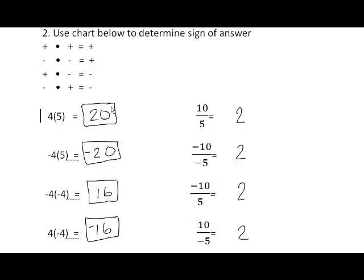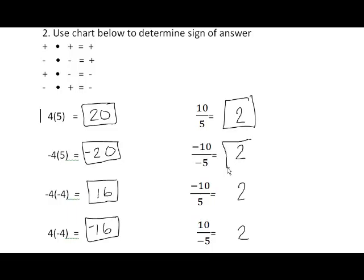Step two: use the chart to determine the sign of your answer. Note that the chart works for division too, not just multiplication. Positive divided by a positive gives a positive answer of two. Negative divided by a negative also gives a positive answer of two. Negative divided by a positive gives a negative answer. And a positive divided by a negative gives a negative answer.